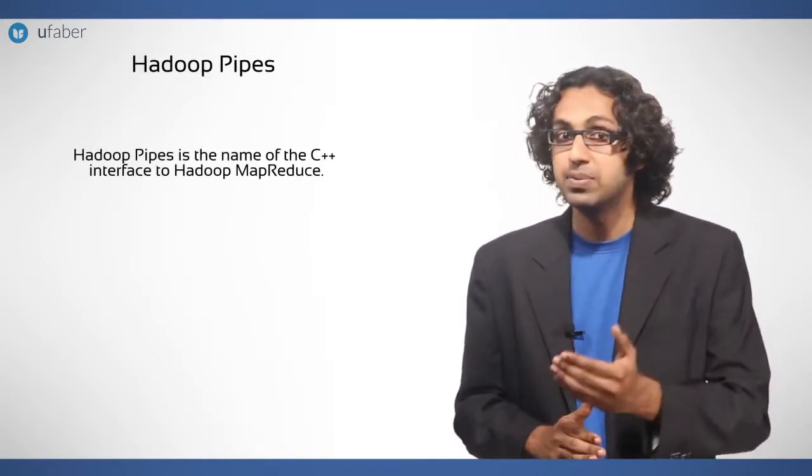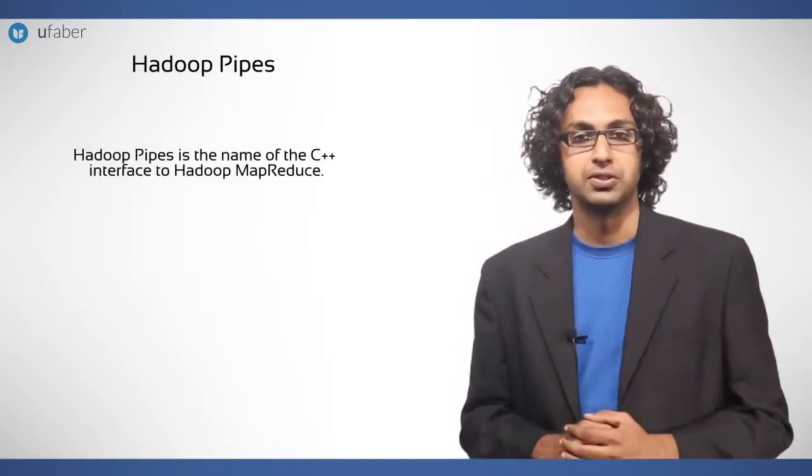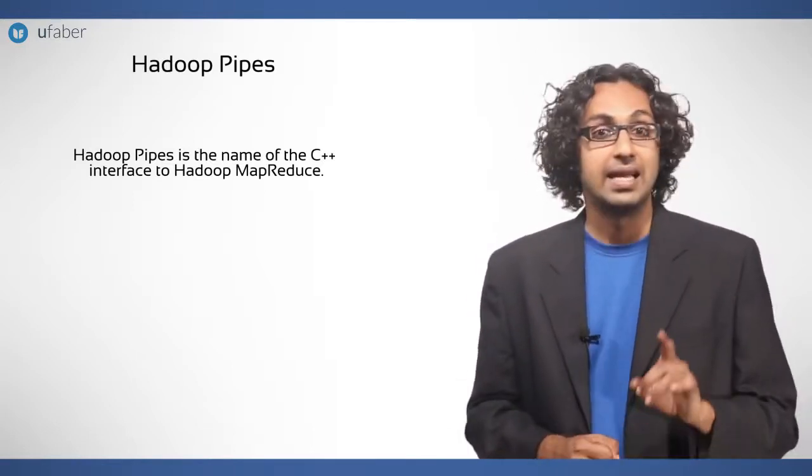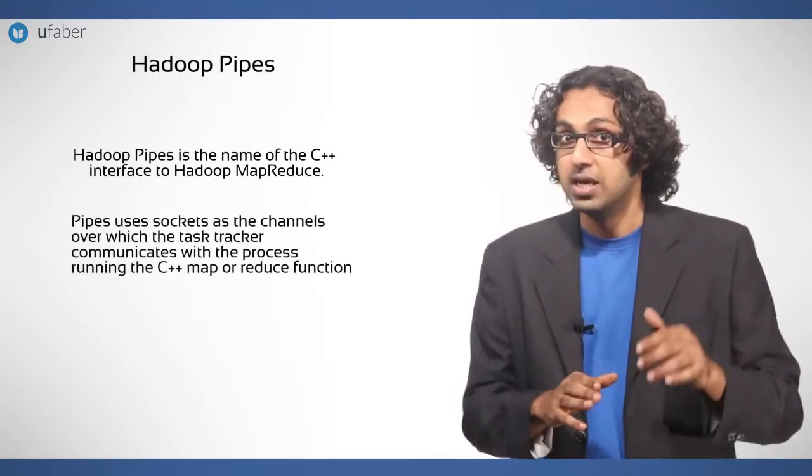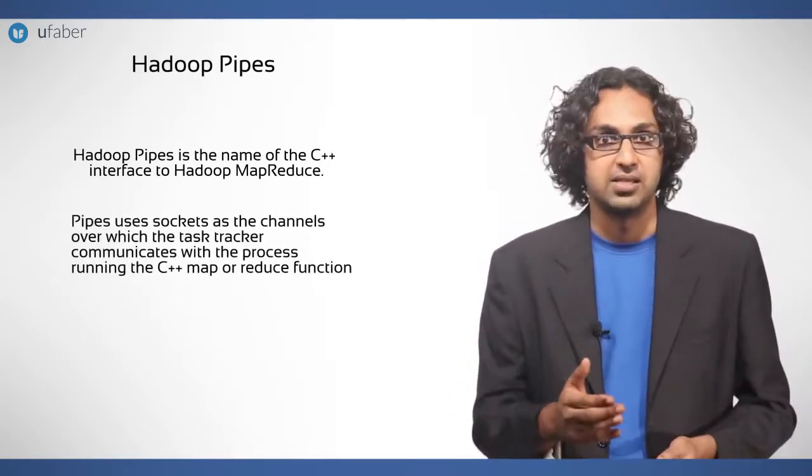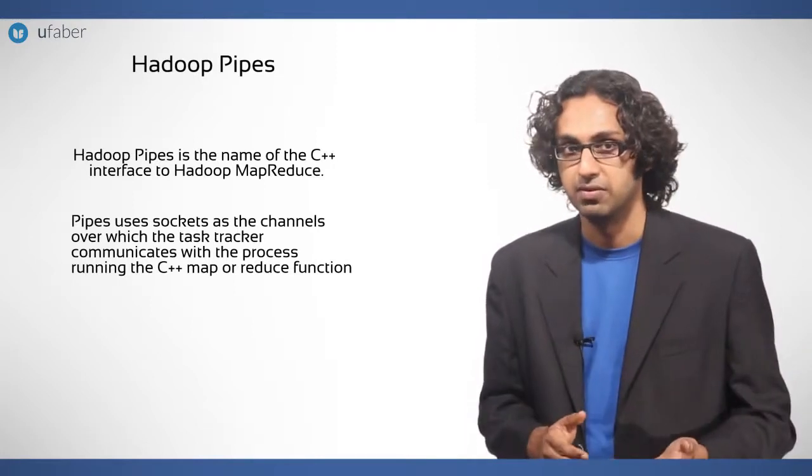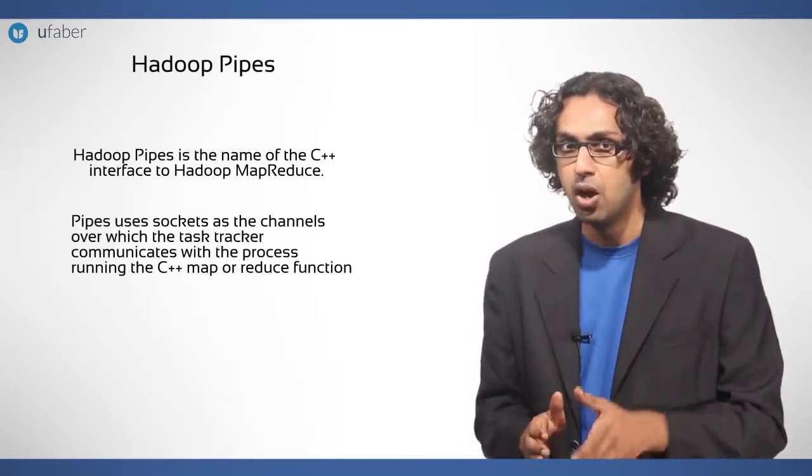Hadoop Pipes. Hadoop Pipes is the name of the C++ interface to Hadoop MapReduce. Unlike streaming, which uses standard input and output to communicate with the map and reduce code, pipes use sockets as the channels over which the task tracker communicates with the process running the C++ map or reduce function.